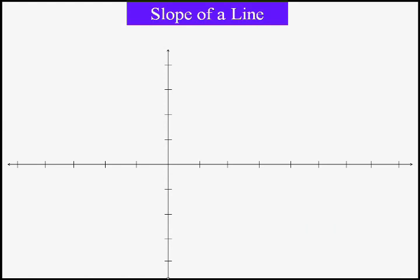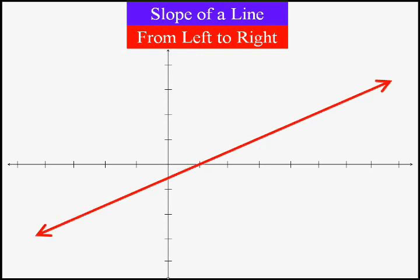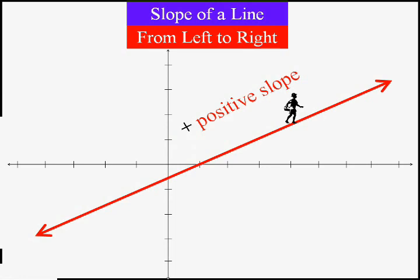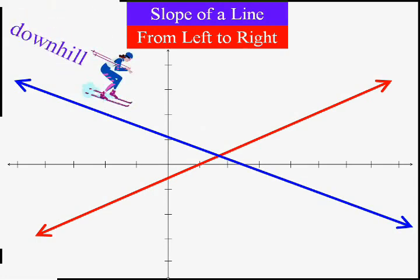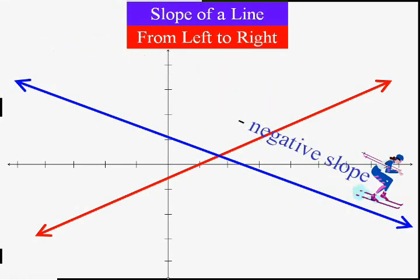If we look at a line from left to right — that's the way we read, so that makes sense — and we try to walk on it, you can see quite easily that you're walking uphill. So the slope would be some positive number. Whereas if we looked at this line and walked left to right, we'd be going downhill, so that would be a negative slope.